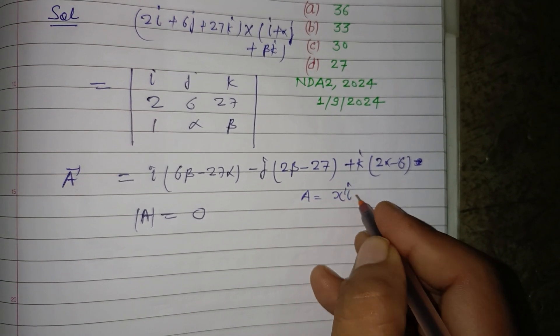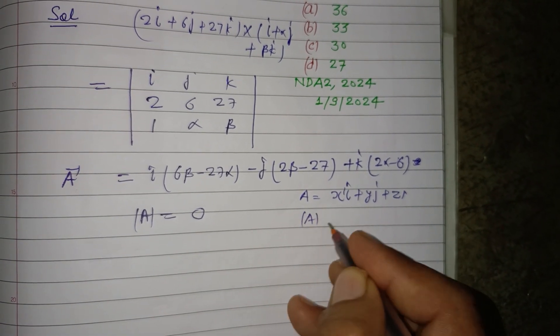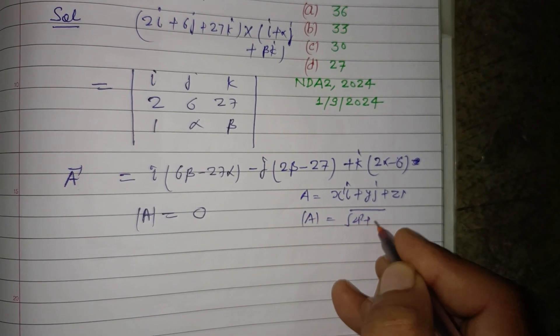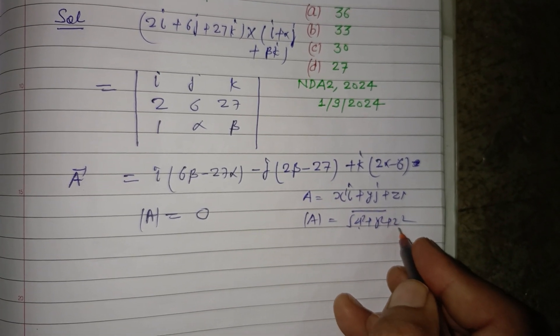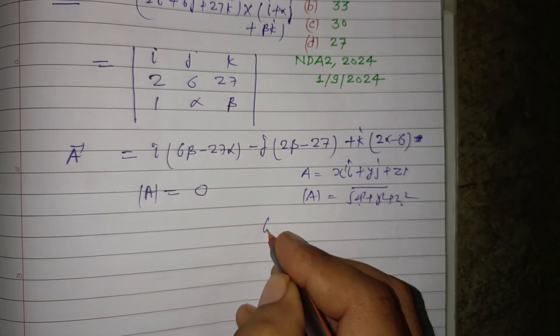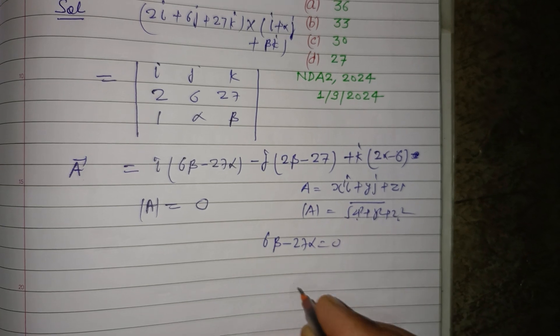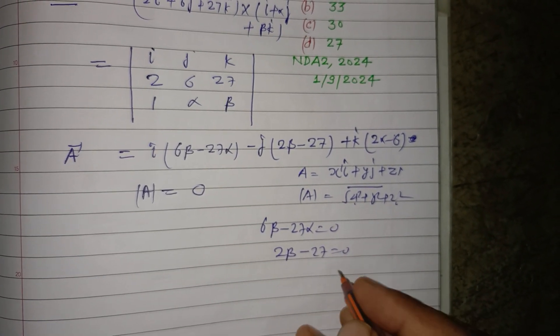For a vector xî + yĵ + zk̂ with magnitude √(x² + y² + z²), if the magnitude is 0, each part must be 0. So: 6β - 27α = 0, 2β - 27 = 0, and 2α - 6 = 0.